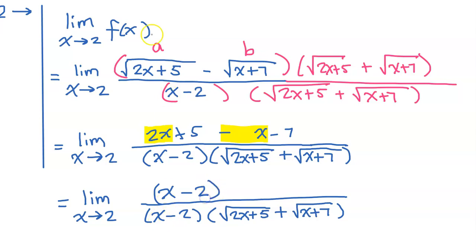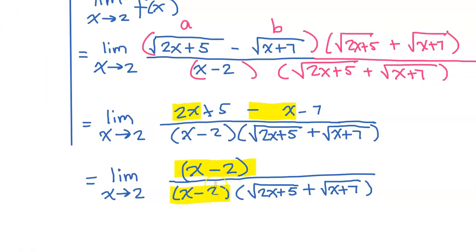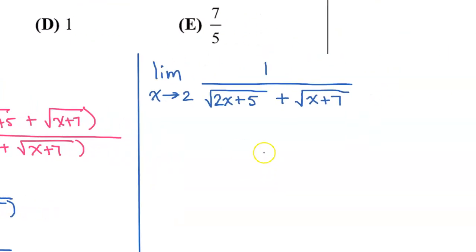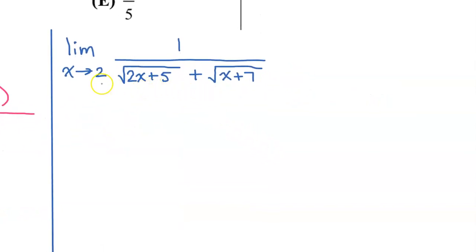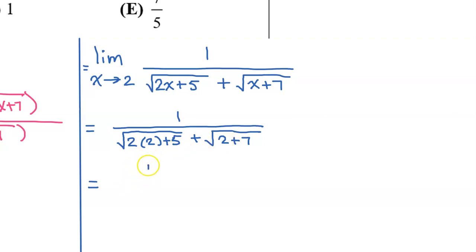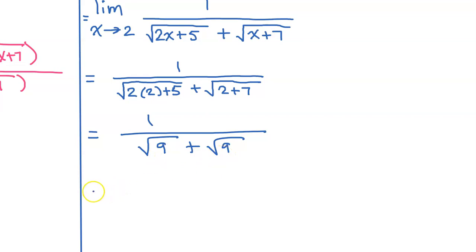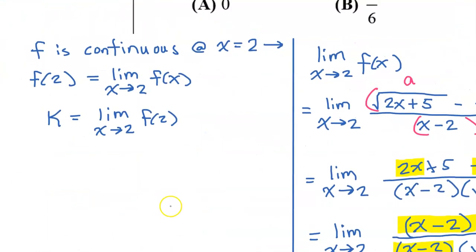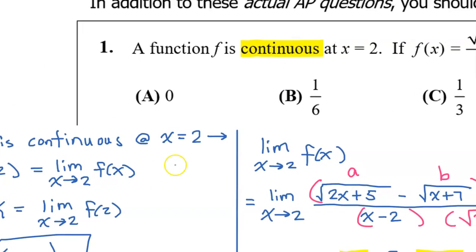We notice that we have a common factor of x minus 2 in the numerator and denominator, so we cancel that out. Now we can do direct substitution without getting 0 over 0. Plugging in x equals 2: 2 times 2 is 4 plus 5 is 9, so we get the square root of 9 plus the square root of 9 in the denominator, which is 3 plus 3, which is 6. So the limit as x approaches 2 is 1/6. Since k equals that limit, k equals 1/6, so the answer is B.